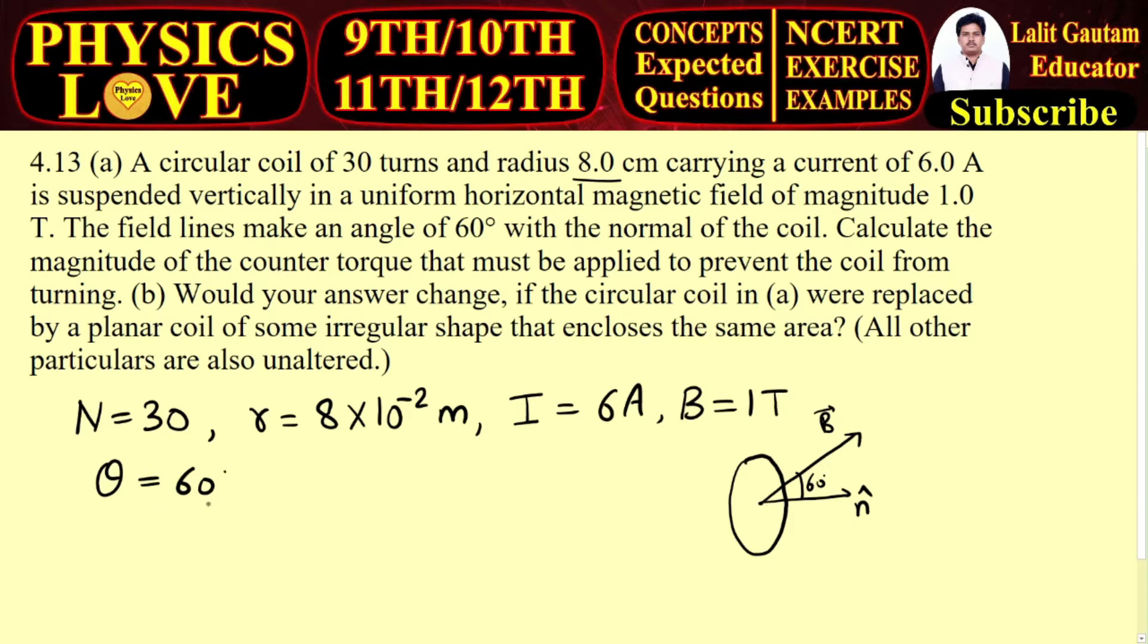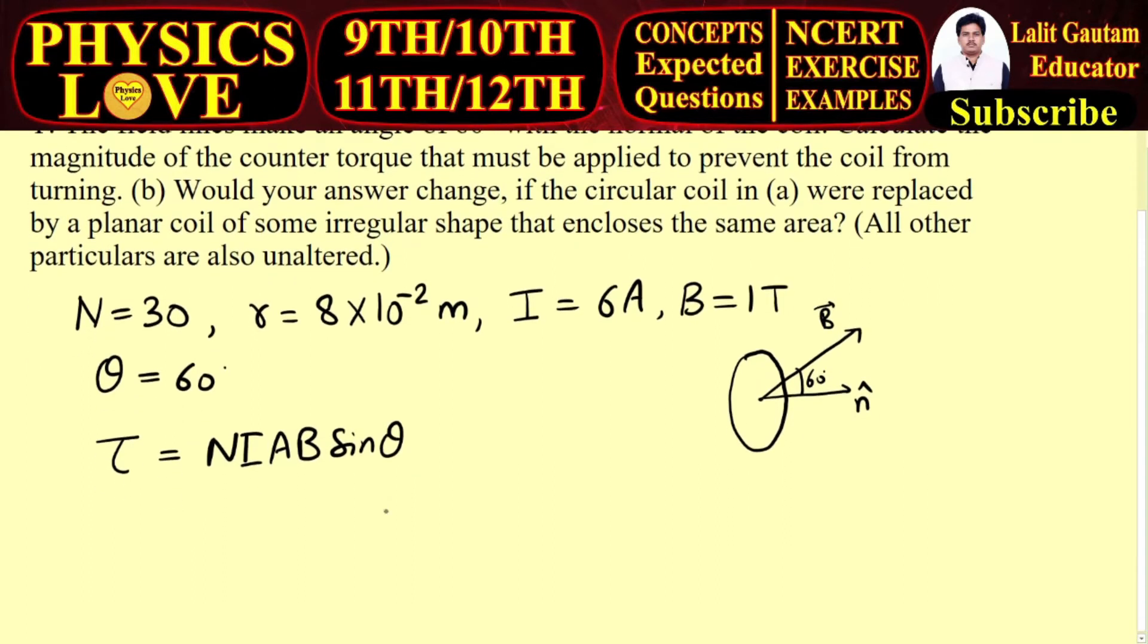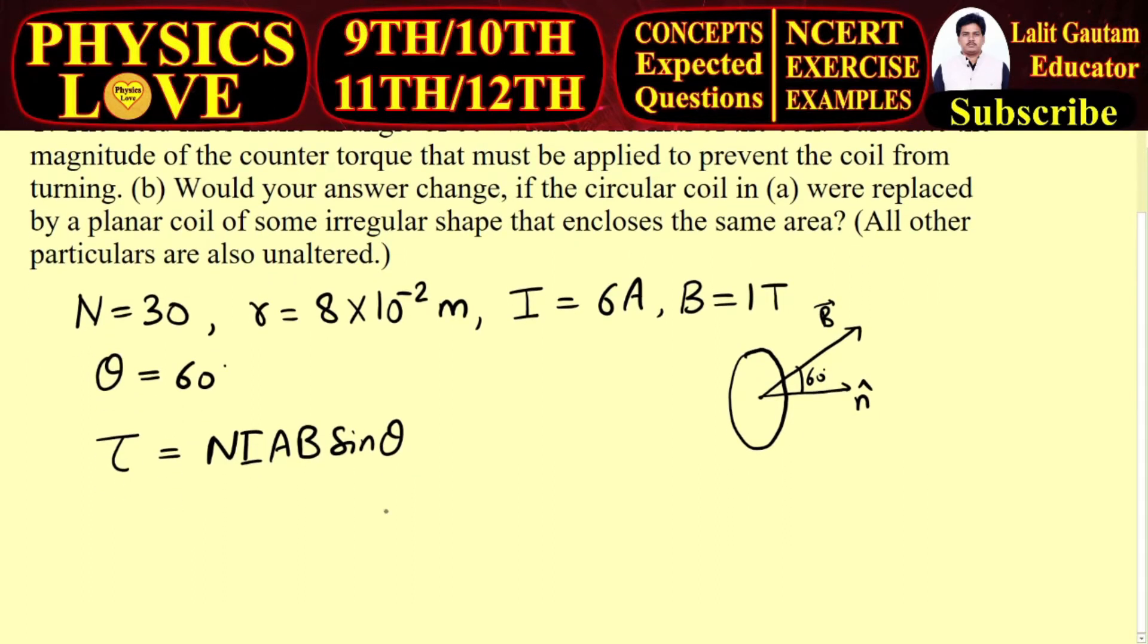Calculate the magnitude of the counter torque that must be applied to prevent the coil from turning. The counter torque must be equal to NIAB sin θ. The restoring torque formula is kθ, and the deflecting torque or counter torque is NIAB sin θ.